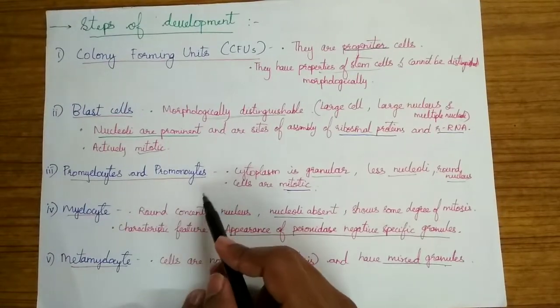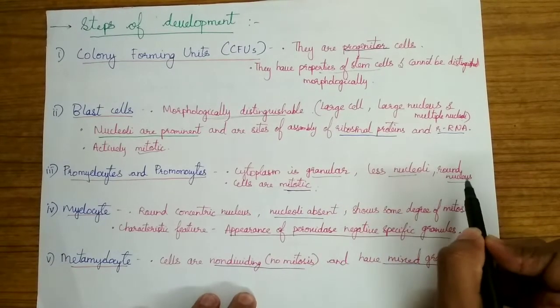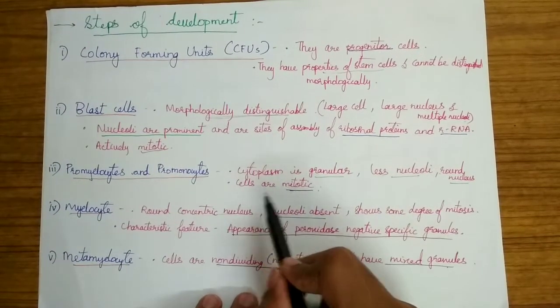Promyelocytes and promonocytes: the cytoplasm is granular, the nucleoli is less, the nucleus is round in shape and these are mitotic cells.